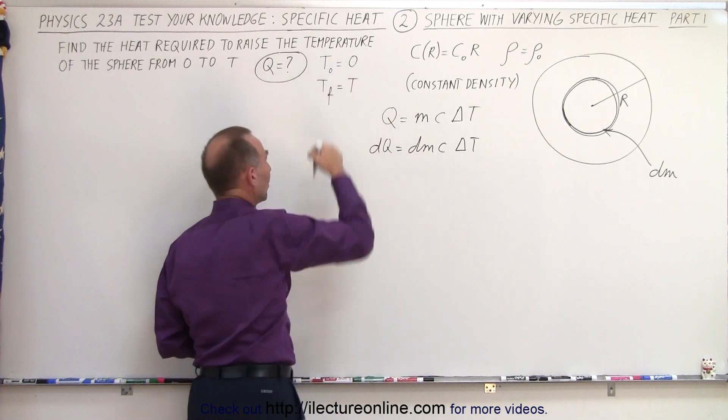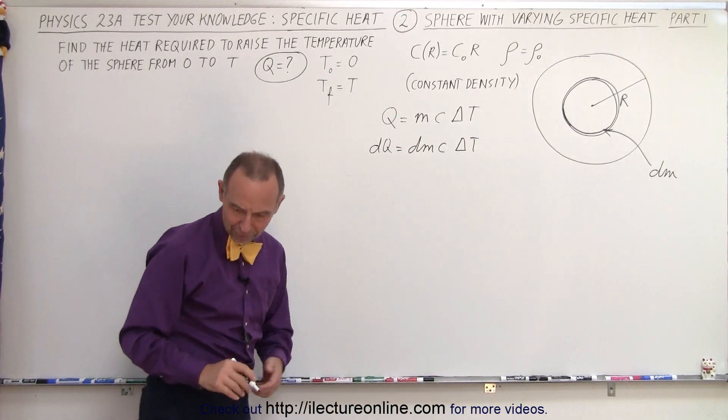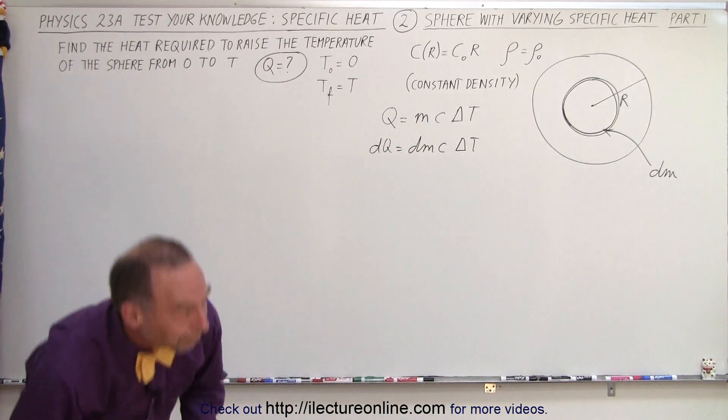Which means our equation then becomes dQ is equal to dm times C times the delta T. Of course, delta T being the difference between the initial and the final temperature.